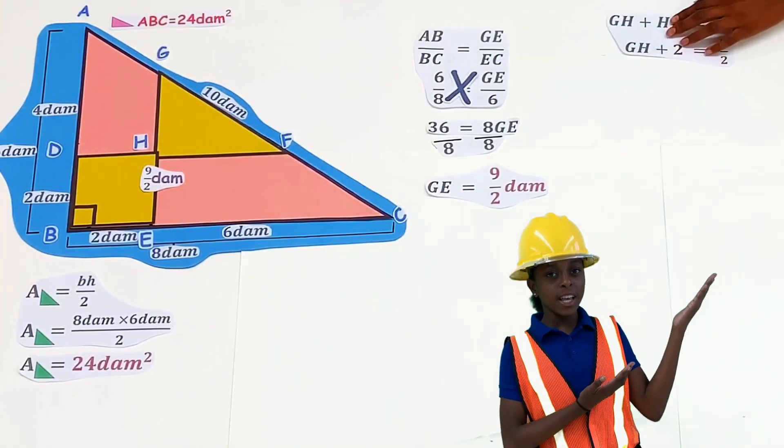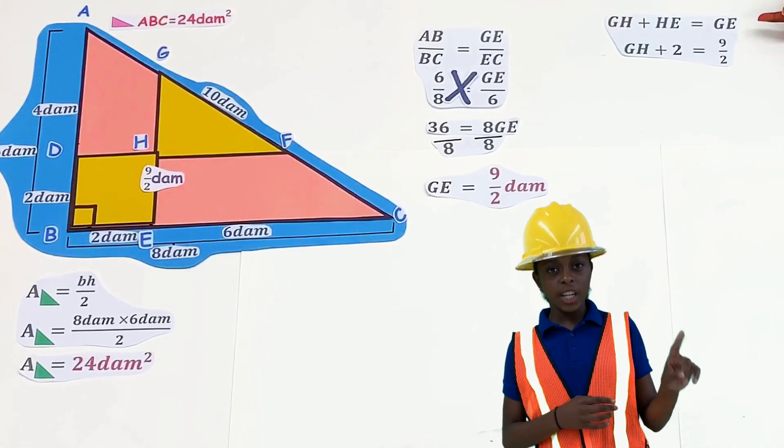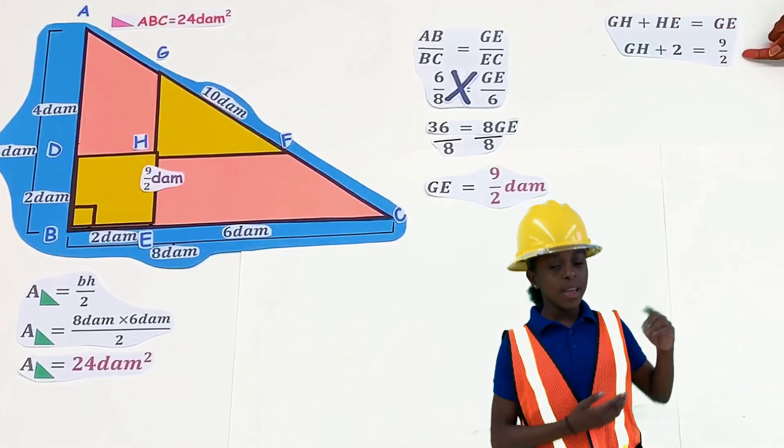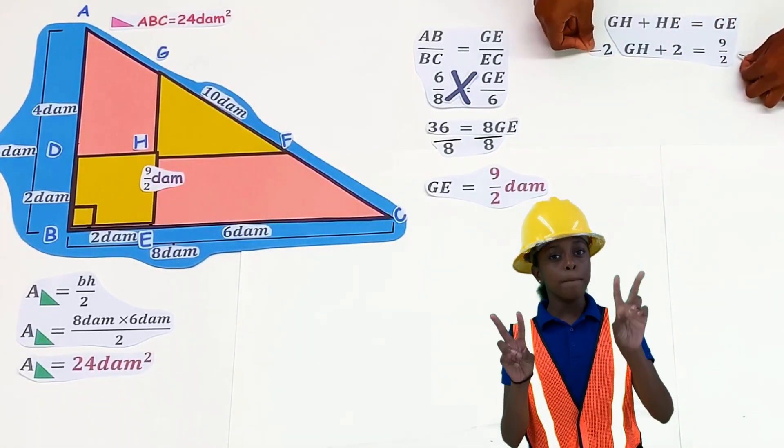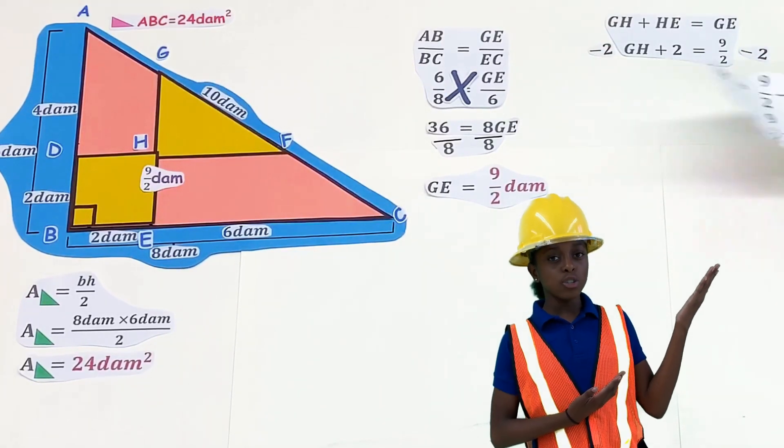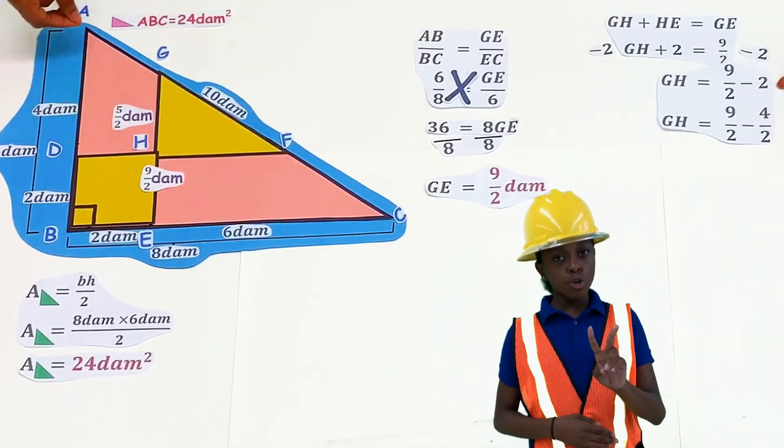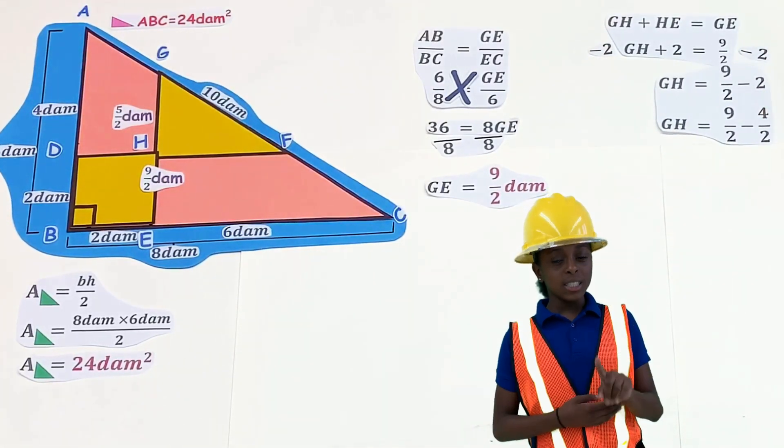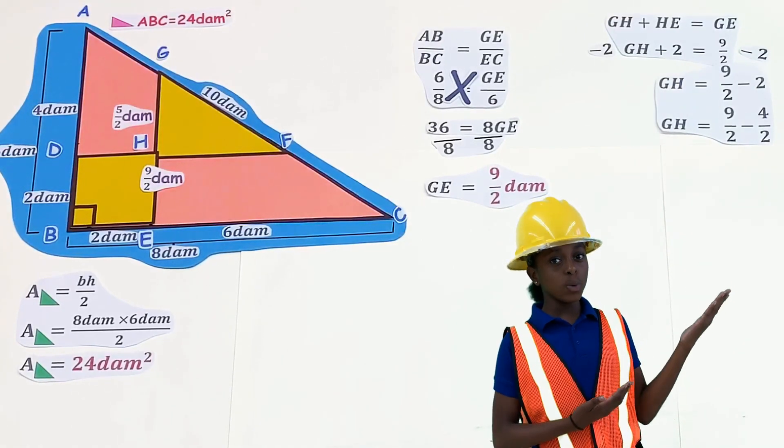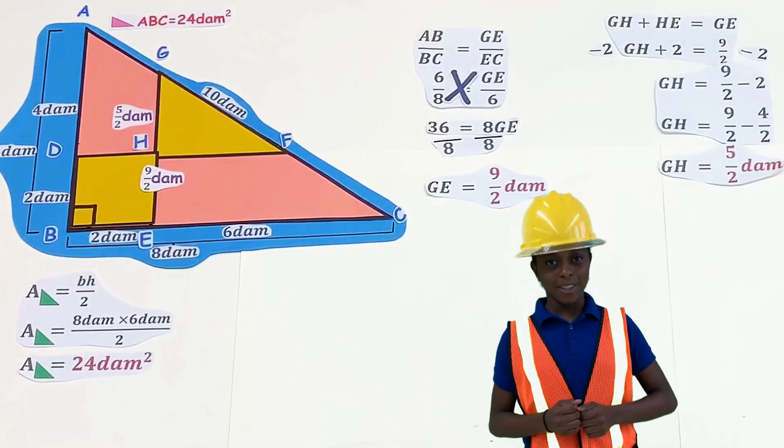Since the sum of GH and HE is equal to GE, it follows that GH plus 2 is equal to 9 over 2. Isolate GH and subtract 2 from both sides. GH is equal to 9 over 2 minus 2. 2 is the same as 4 over 2. So the difference of 9 over 2 and 4 over 2 is 5 over 2. GH is 5 over 2 decimeters.